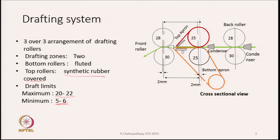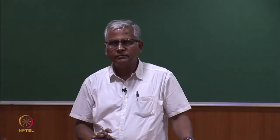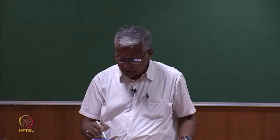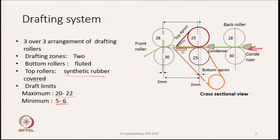In the cross-sectional view, we can see condensers and the entry of the sliver. The sliver passes through a condenser, gets stretched in the back zone, then passes through another condenser and enters the nip of the middle pair of rollers. An apron runs over the middle rollers — a bottom apron shown in orange and a top apron in red. These aprons help in guiding the fibers in the main drafting zone.